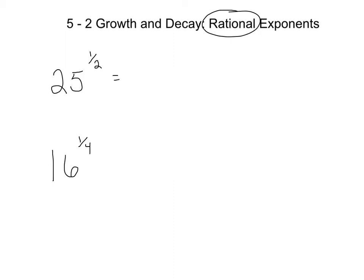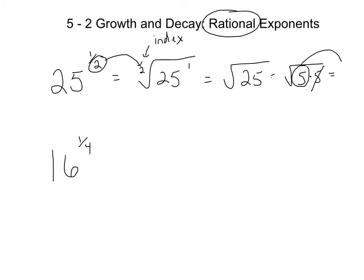Okay, so if you have 25 raised to the 1 half power, that really means that you're taking the square root of 25 to the 1st power. This outside number becomes this number right there. Now usually when we do a square root, we don't even put the 2. It's just kind of implied. That number is called the index. Write that down because that's an important number.